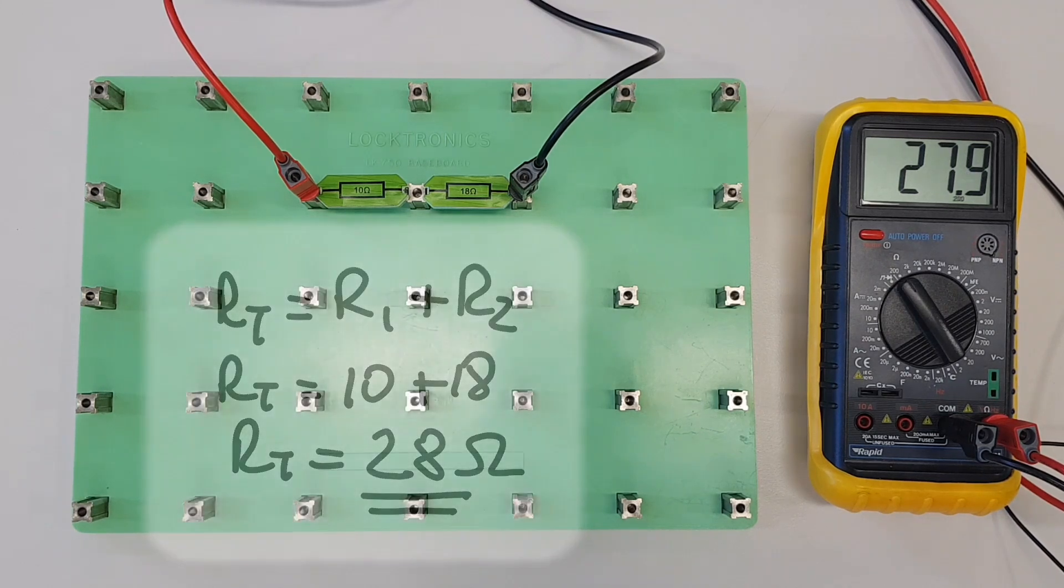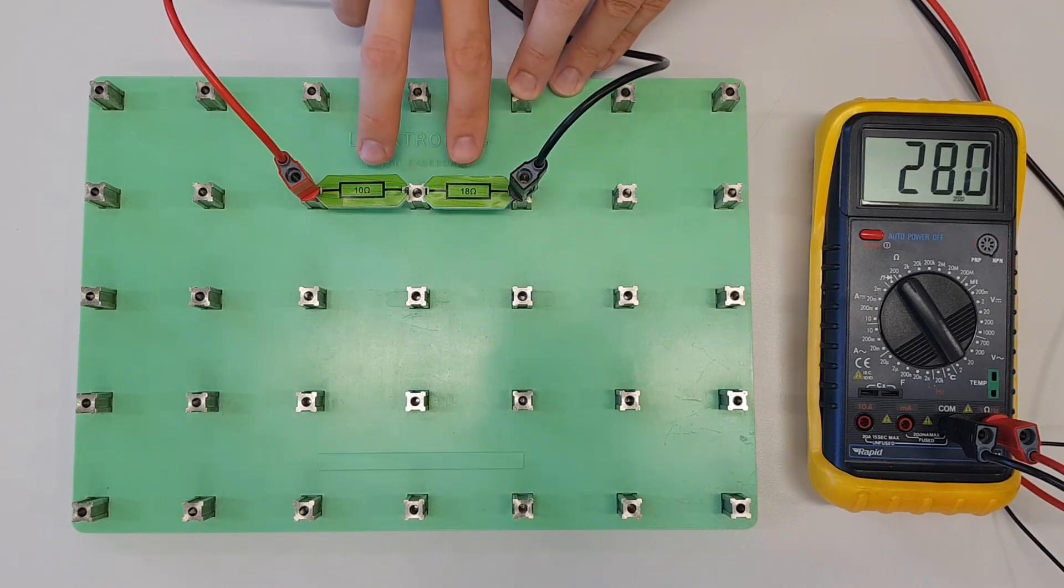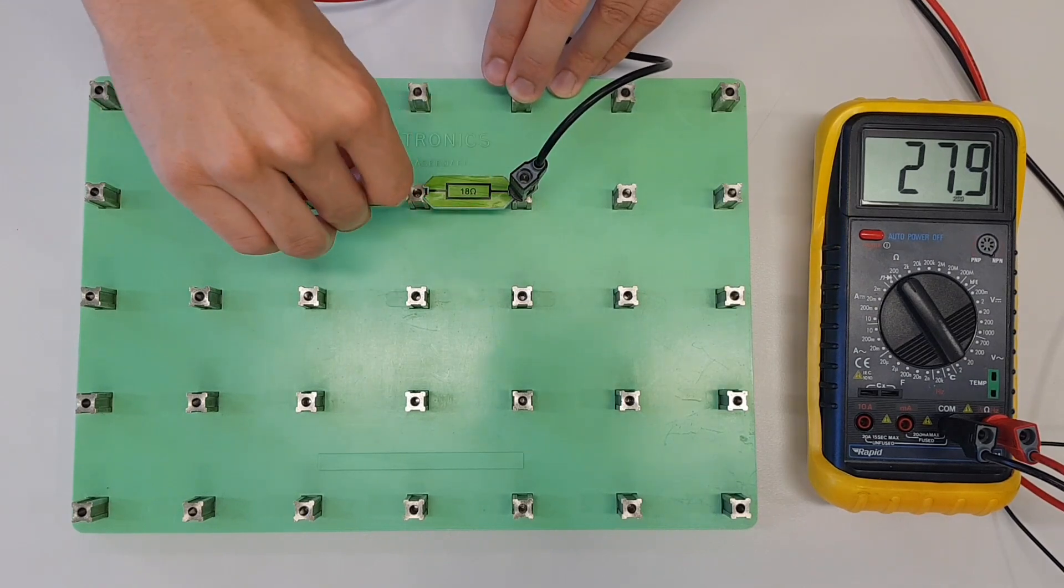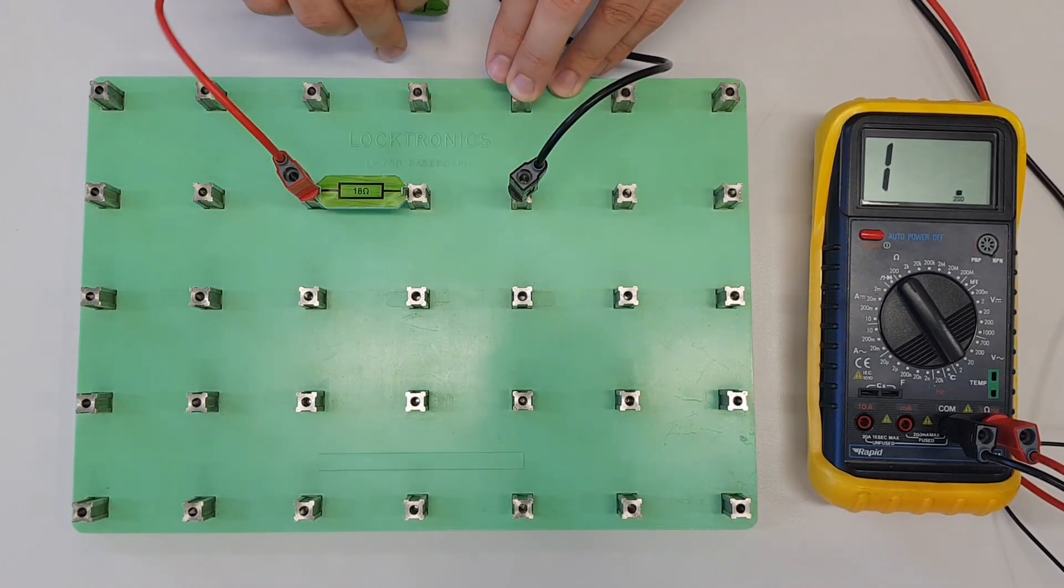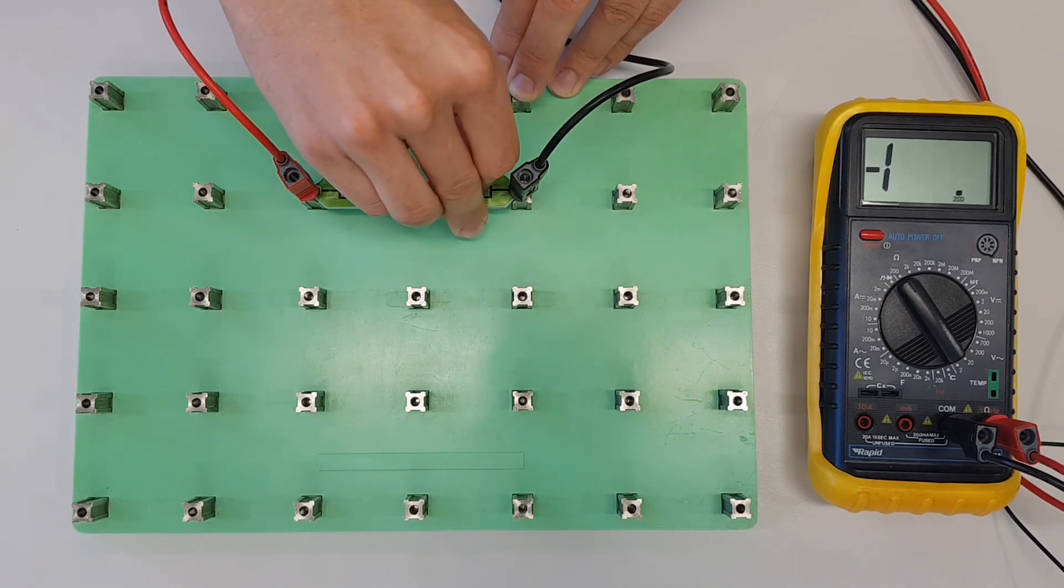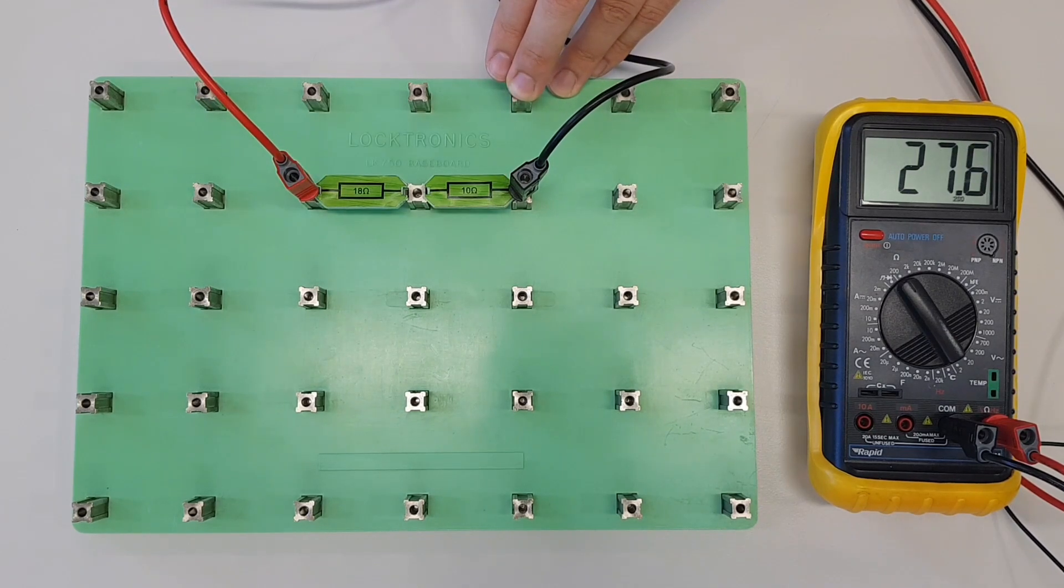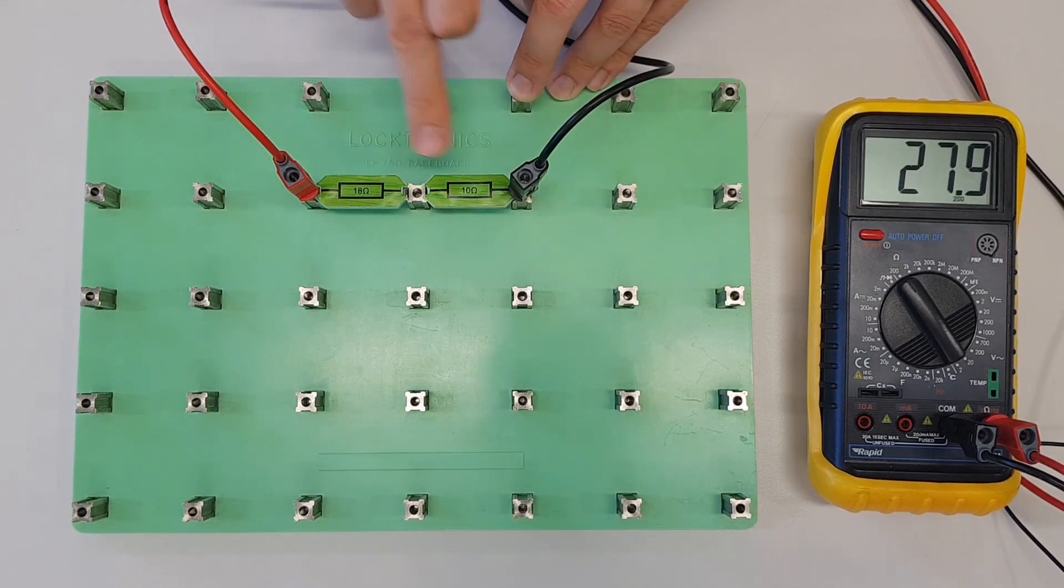But you may be thinking, well that's all well and good, but what if I swap over the two resistors—will I still get the same result? Let's have a look. If we remove the 10 ohm resistor and the 18 ohm resistor and pop those in side by side, do we still get 28 ohms? Well, of course we do. And this follows mathematical logic because just as it doesn't matter what order you add numbers in, it doesn't matter what order we connect our resistors in—we'll still get the same total resistance in the circuit.